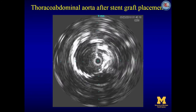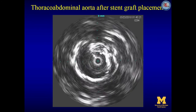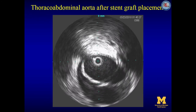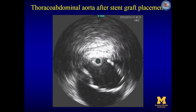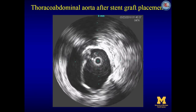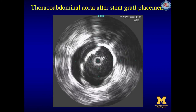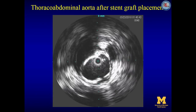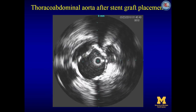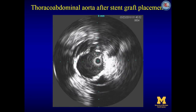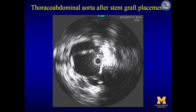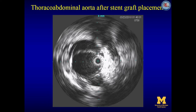The abdominal aorta true lumen is now expanded — remember this section was almost totally collapsed when we saw it on the pre-treatment IVUS. Here the celiac artery will come off shortly at 1 o'clock, and here is the superior mesenteric artery coming off at 12 o'clock. The right renal artery is coming off at 12 o'clock, and the left renal artery is coming off at 5 o'clock. Again, the infrarenal aorta true lumen is also expanded.